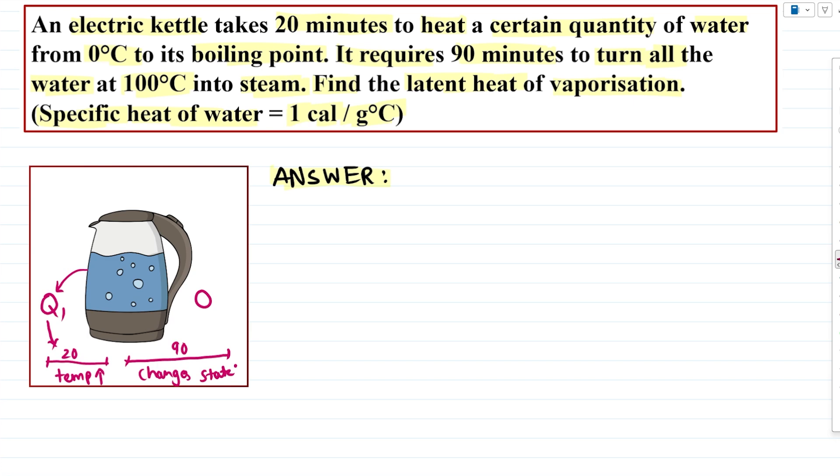Now, the second type of heat. That is the heat required to convert the water into steam. Who will provide that heat? Our kettle will provide that heat. So there are two heats Q1 and Q2 which our kettle provides. The amount of heat Q1 and Q2 provided by our kettle can be different, but the rate at which this heat is provided, the rate at which heat is supplied.